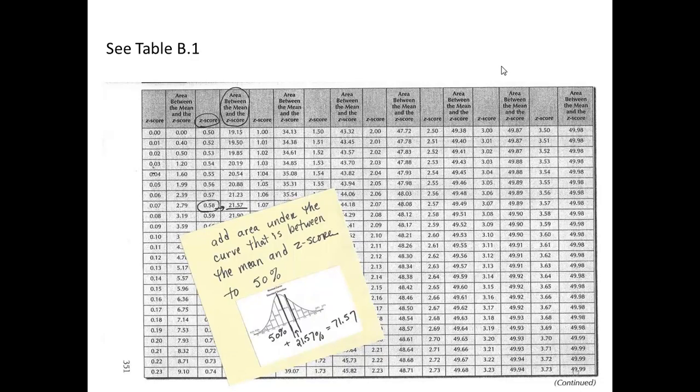Again, I referred you to table B1 and this is what we did. We calculated our Z-score. We find it on the table. And then we look at what area under the curve corresponds to a Z-score of .58. And we see that it's 21.57 of the area between the mean and that Z-score. We add that to 50% and we see that it comes out to 71.57 percent.